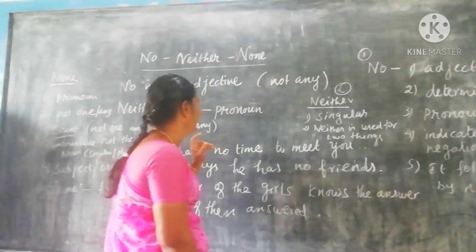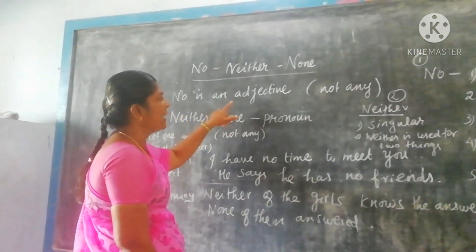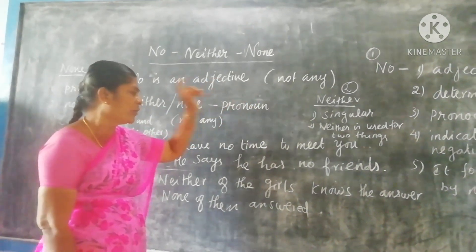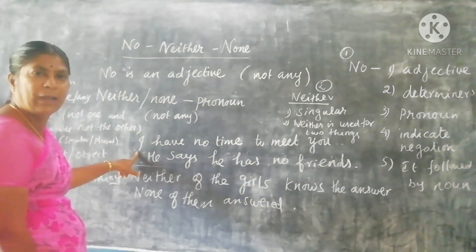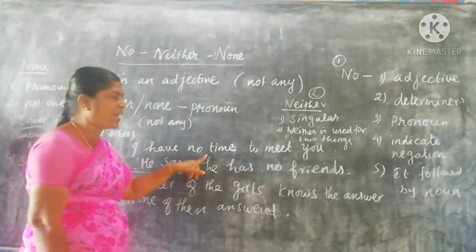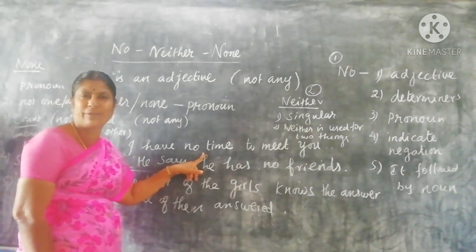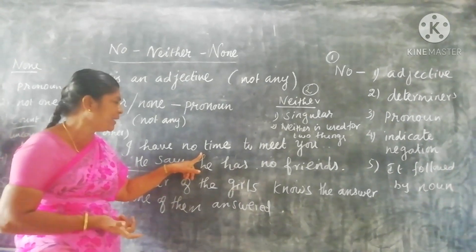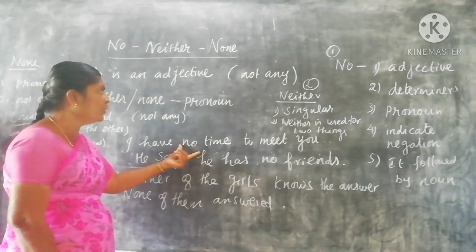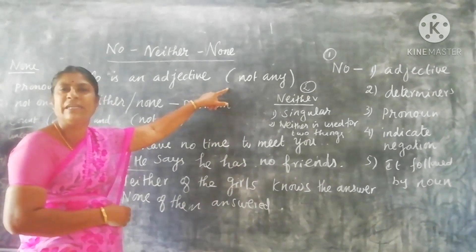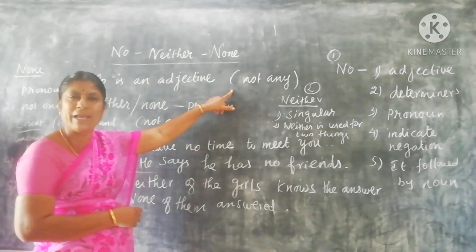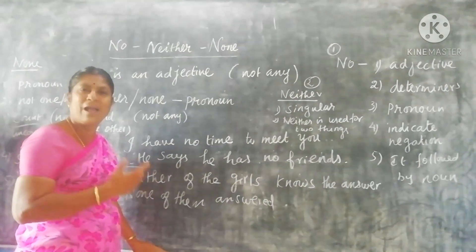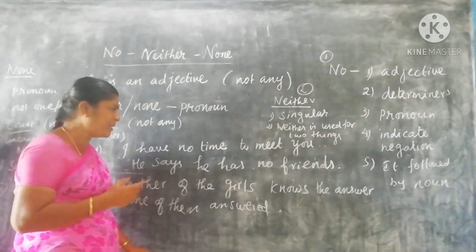No is an adjective used in the place of not any. For example, I have no time to meet you — that means I don't have any time to meet you. So the word no gives the answer not any.